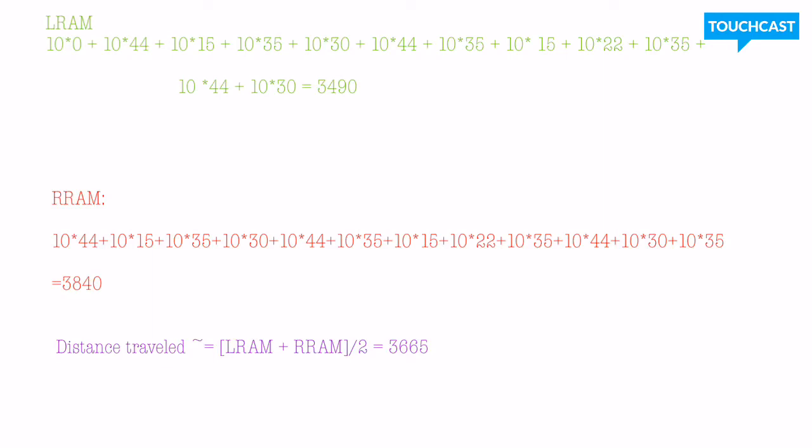That worked out because each rectangle was 10 seconds wide and its height was measured in feet per second. So seconds times feet per second gave me an area that was measured in feet for each rectangle, which I could add up. And I had a final estimate of my final distance traveled which was measured in feet. Notice here the conversion was done for you.